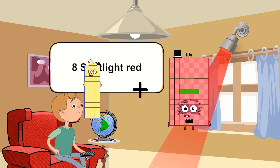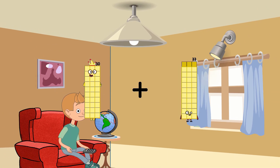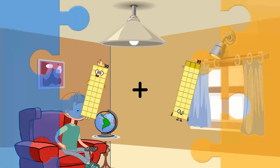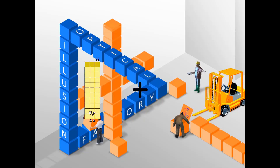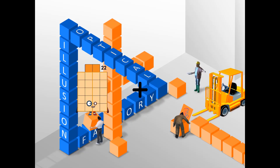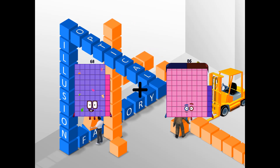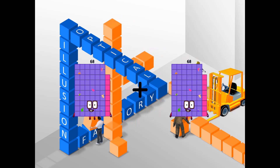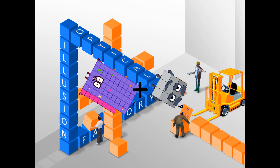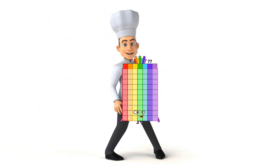Plus thirty-three equals sixty-three. Sixty-eight plus nine equals seventy-seven.